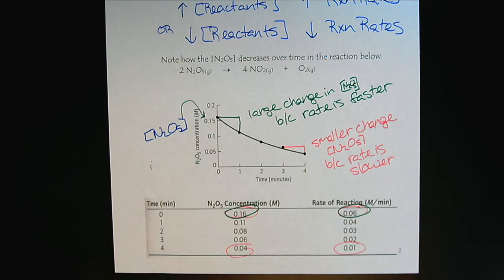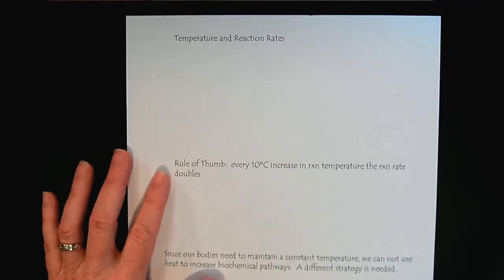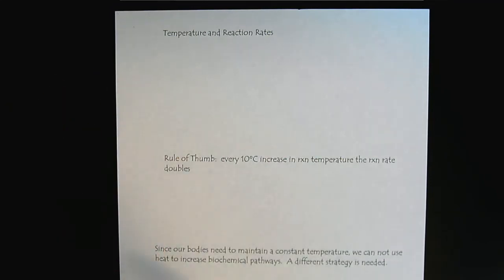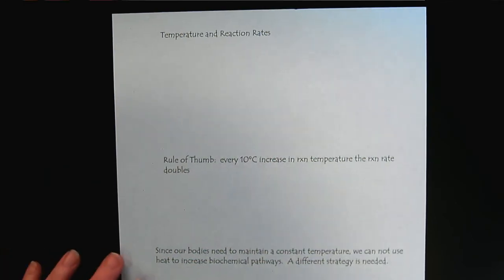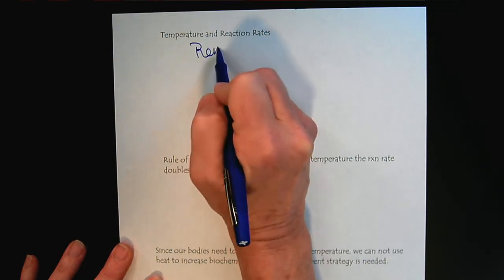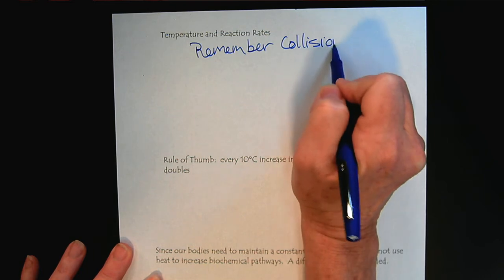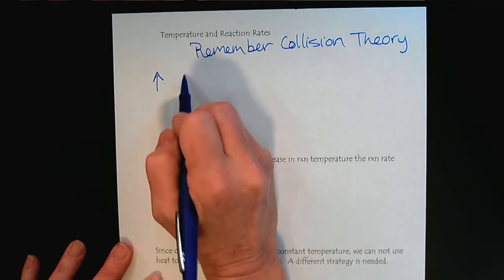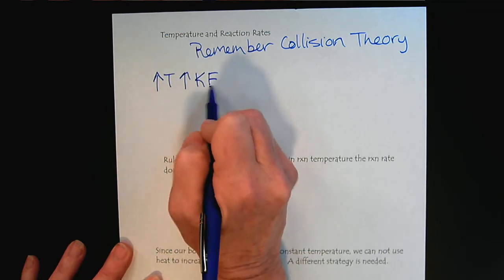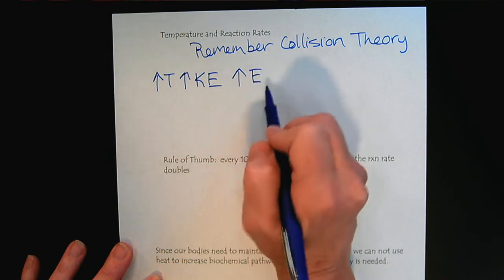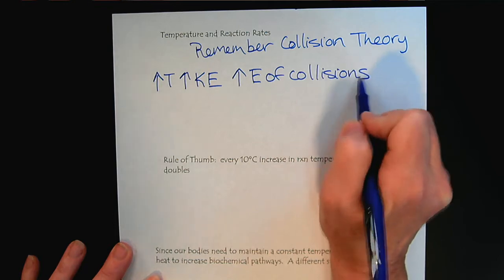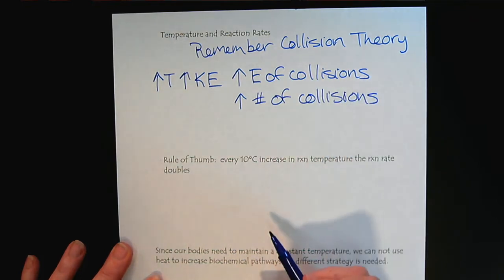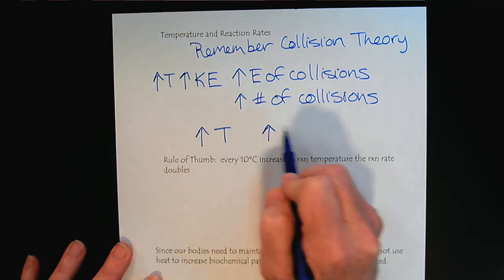Now let's see what happens with temperature. The concepts in this tutorial are heavily based on collision theory, so if some terms are unfamiliar, go back to the collision theory video tutorial. As we increase the temperature, we increase the kinetic energy of the system, which increases the energy of the collisions and also increases the number of collisions. Therefore, as we increase the temperature, we increase the reaction rate.